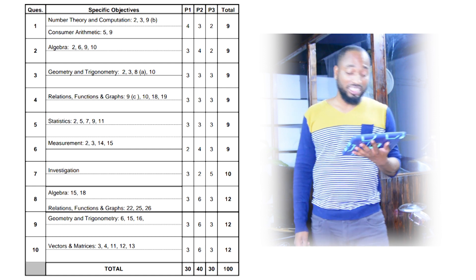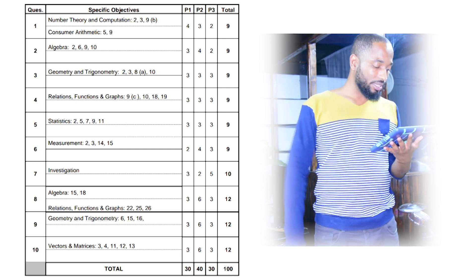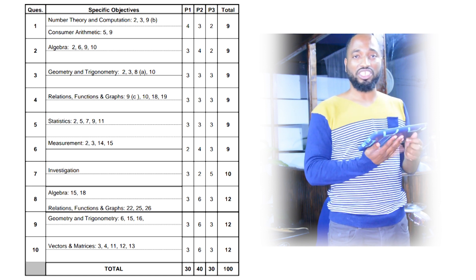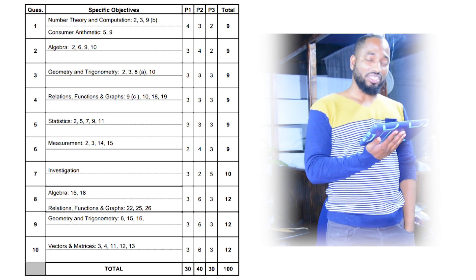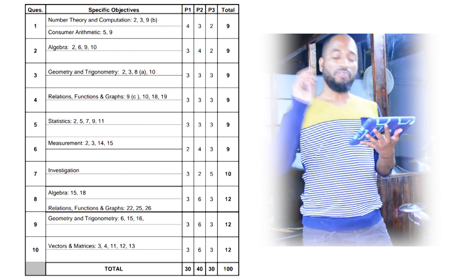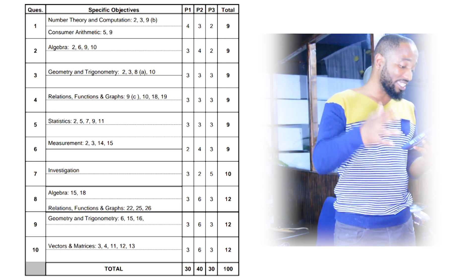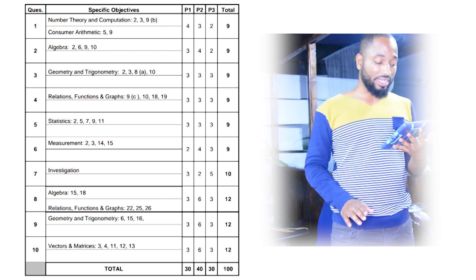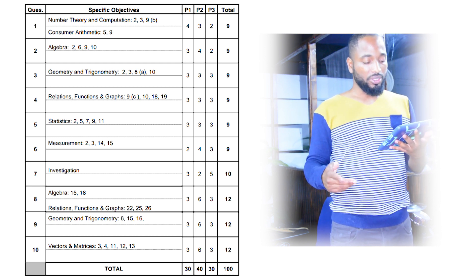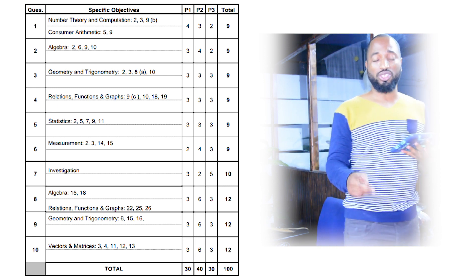Number five is statistics — this is where they will go all in on statistics. Number six is measurement. Number seven is investigation, where you'll have to pick out patterns and stuff like that. You should notice that the first six questions are each worth nine marks, number seven is 10 marks, and the last three questions are worth 12 marks each.